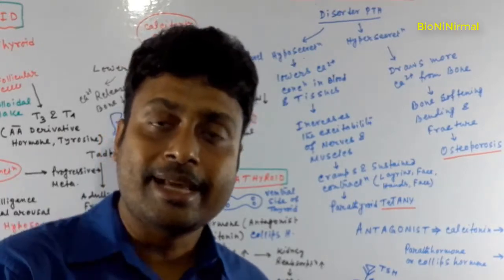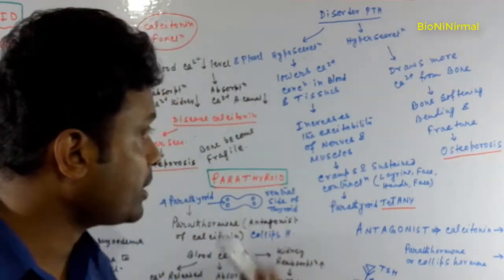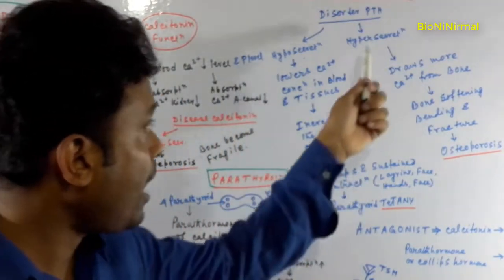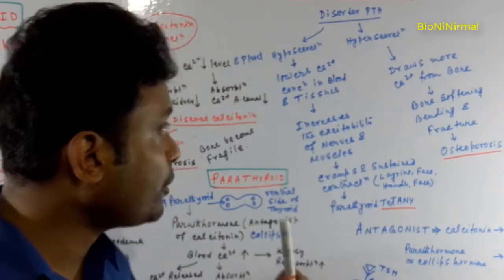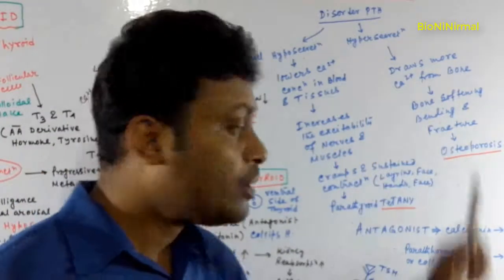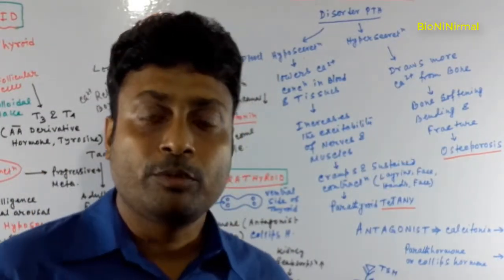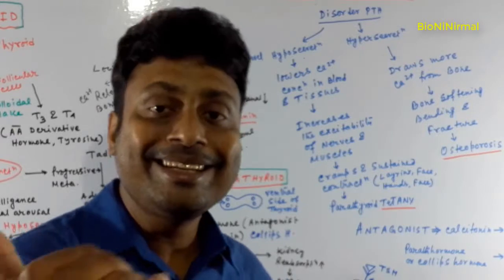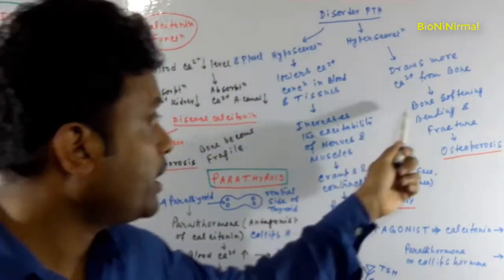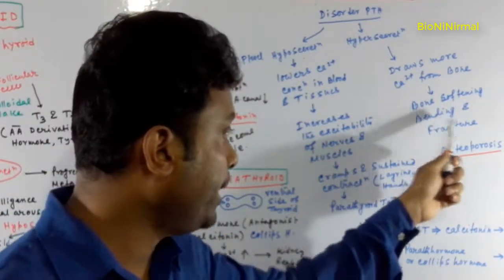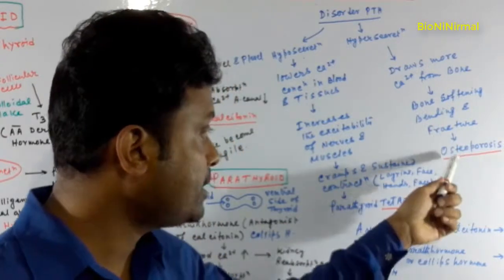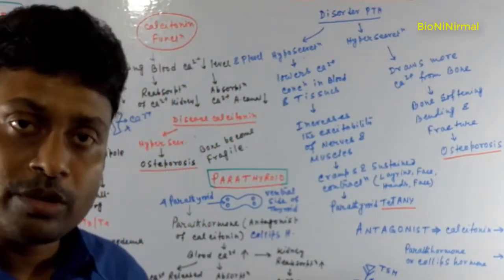Hypersecretion of parathormone actually increases the release of calcium from the bone, so the bones become soft, bend, and fracture — and this disease is called osteoporosis.